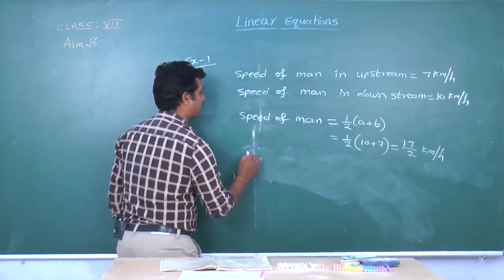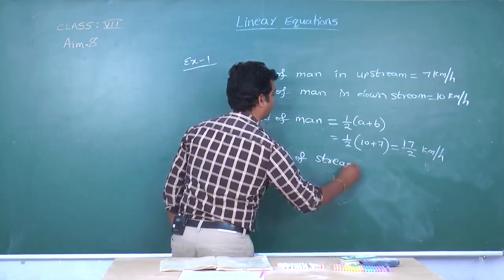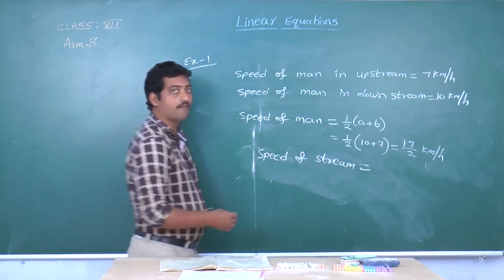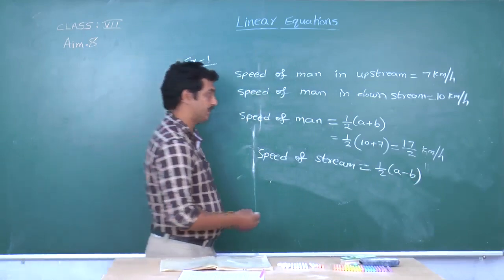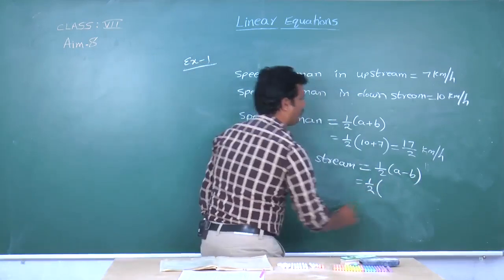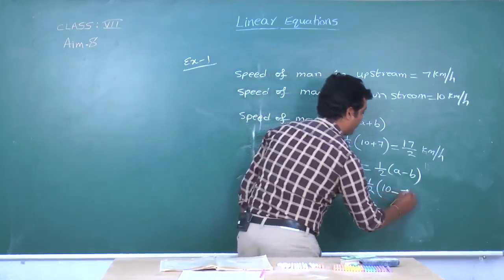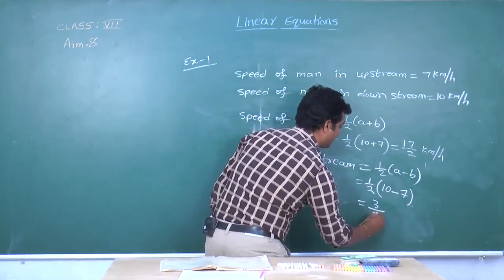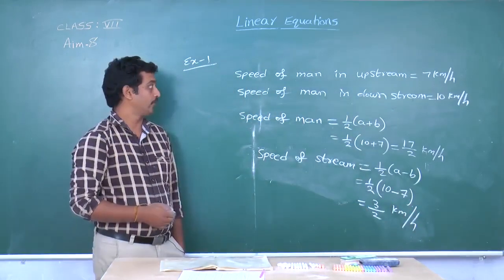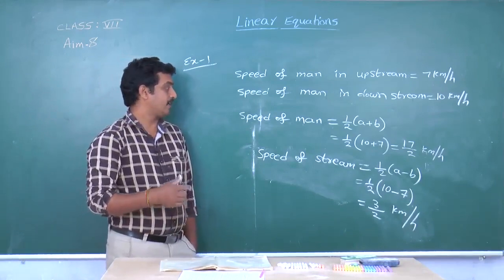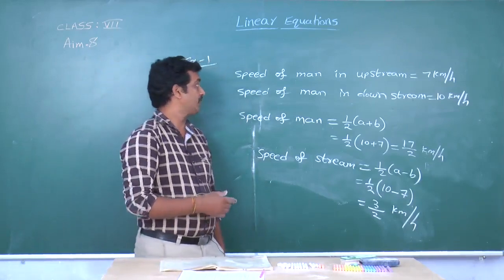Speed of the stream equals half into (a minus b), which equals half into (10 minus 7), which equals 3 by 2 kilometers per hour. Therefore, we have found the speed of the man and the speed of the stream when we are provided the speed of the man in upstream and speed of the man in downstream.